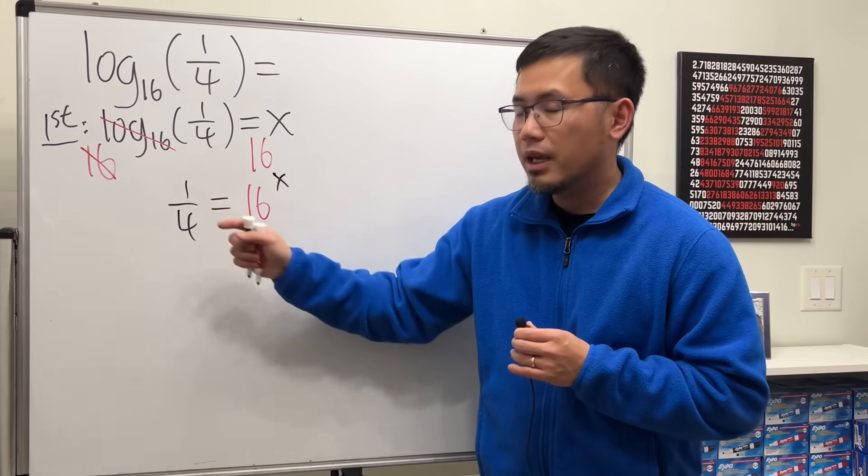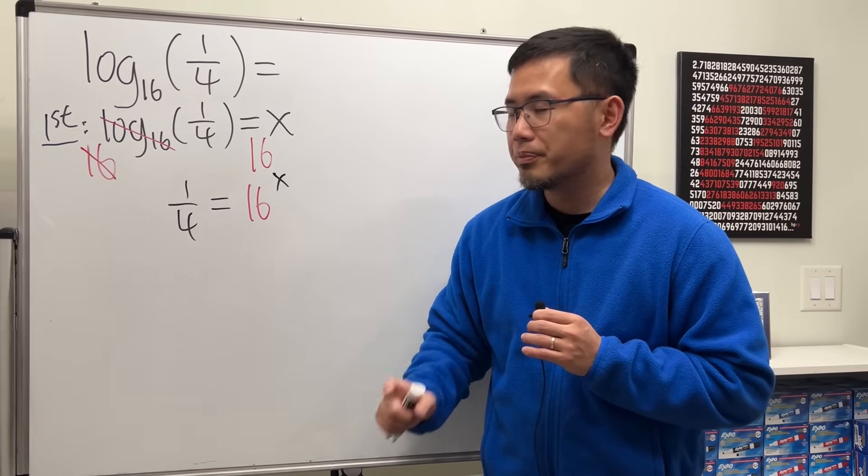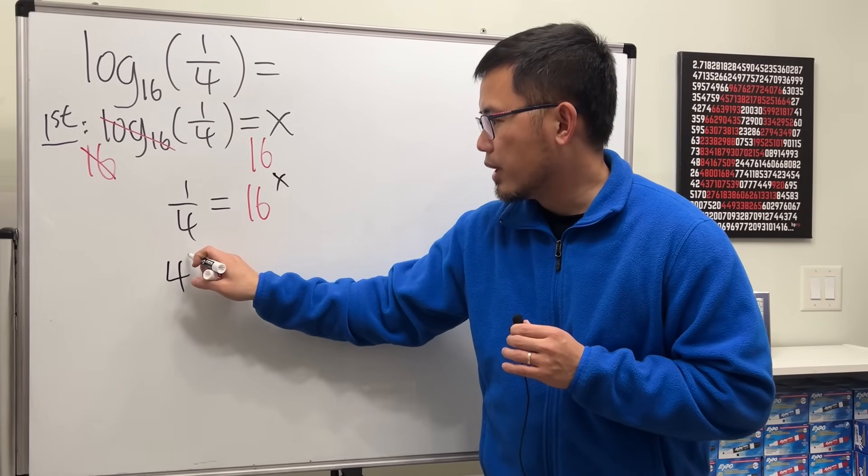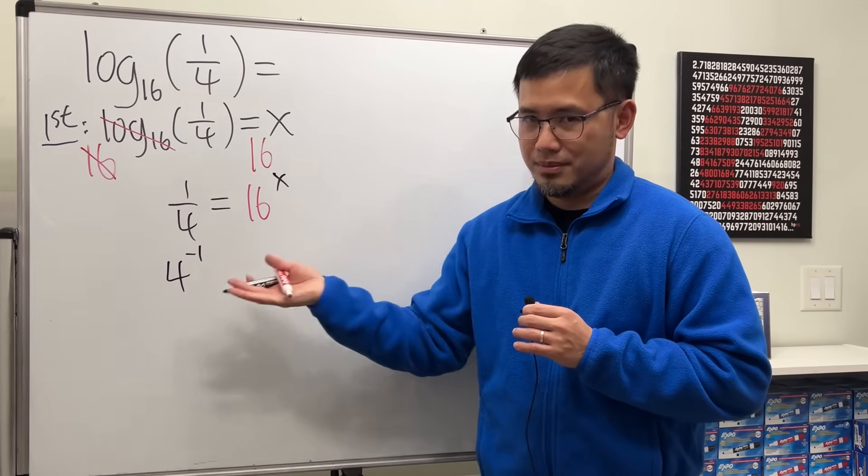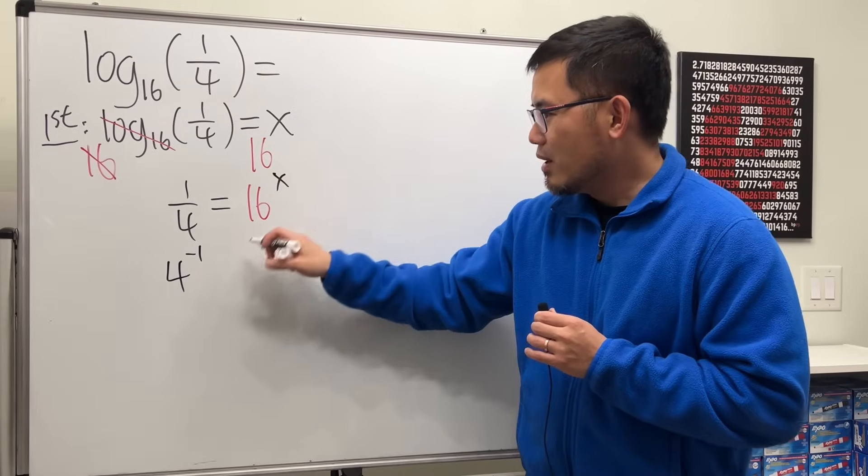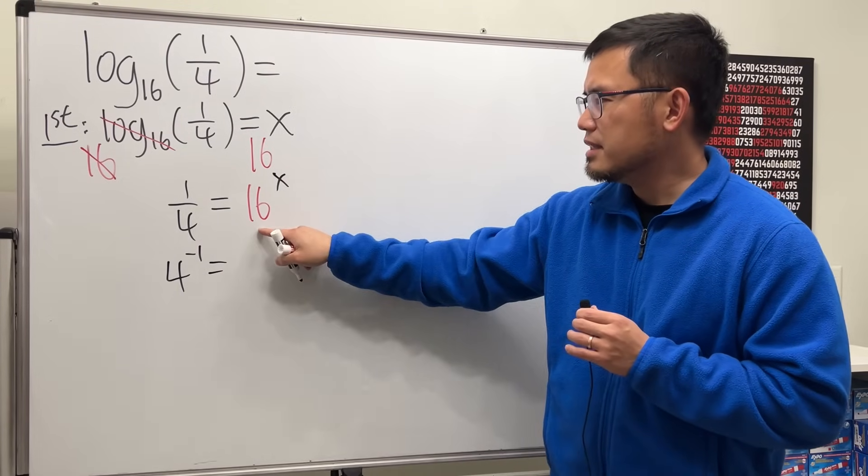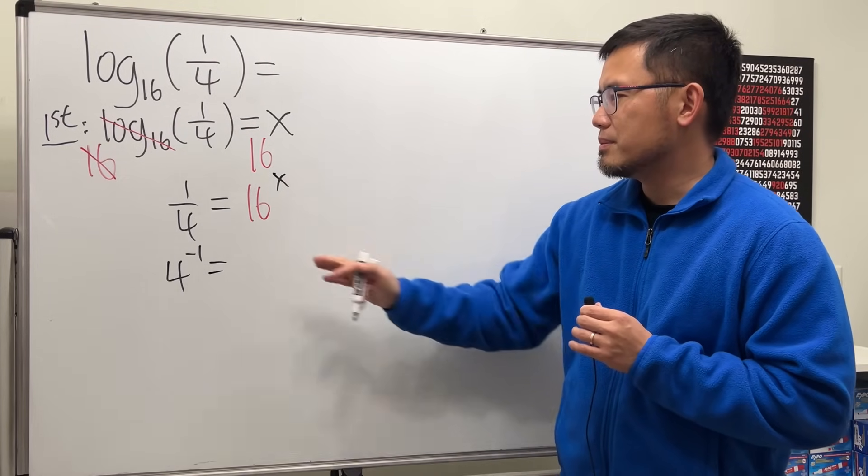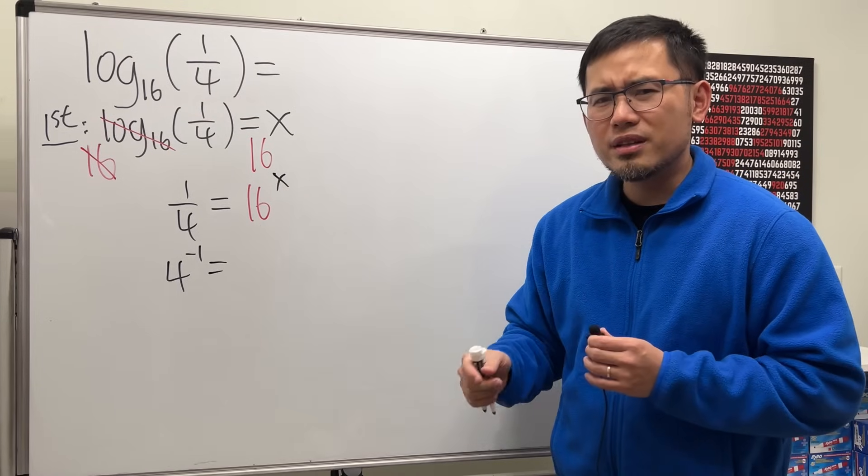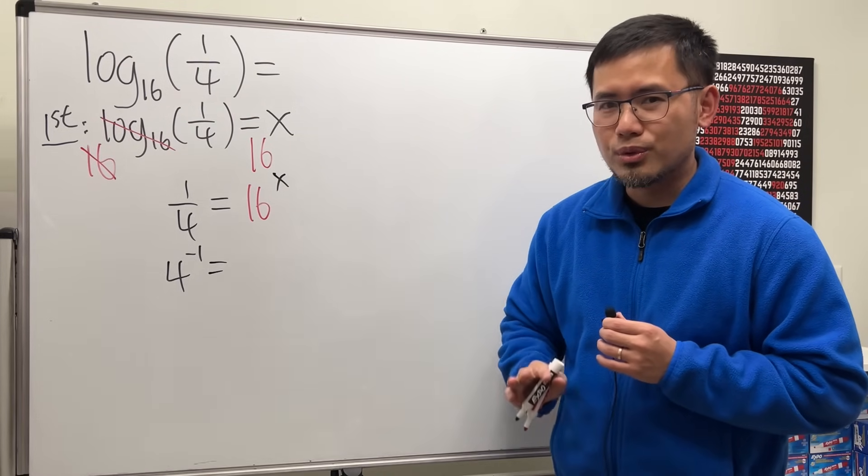We can bring that up and make that into a negative exponent. So this is the same as 4 raised to the negative 1. Nice, huh? Now on the right hand side, 16 to the x power. For the 16, we can break it down as 2 times 2 times 2 times 2, but no, don't do that.